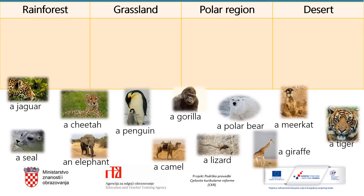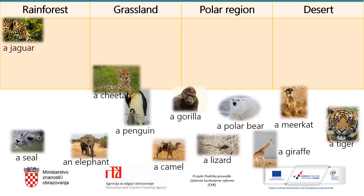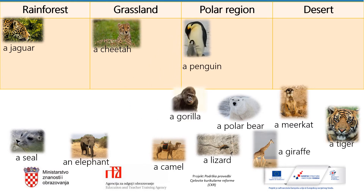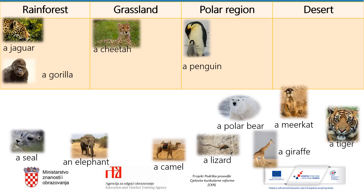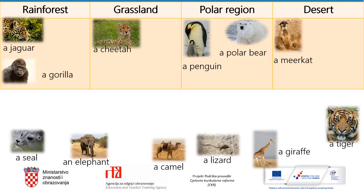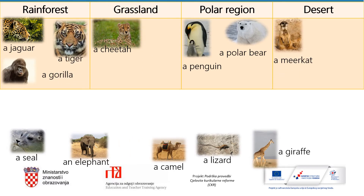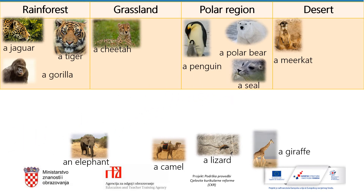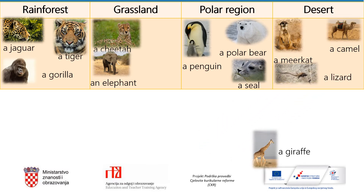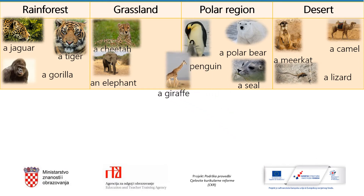Let's check. A jaguar belongs to the rainforest. A cheetah to the grassland. A penguin to the polar region. A gorilla to the rainforest. A polar bear to the polar region. A meerkat lives in the desert. A tiger in the rainforest. A seal in the polar region. An elephant in the grassland. A camel and a lizard live in the desert. And a giraffe in the grassland. I hope you've done everything correctly. Well done!